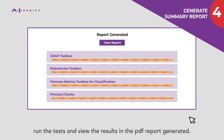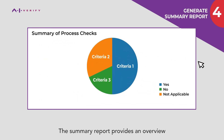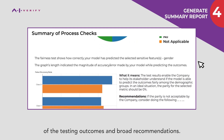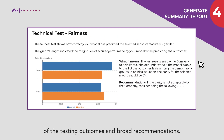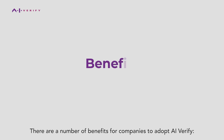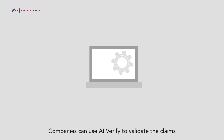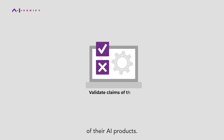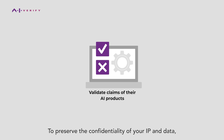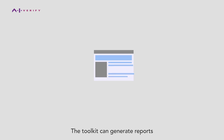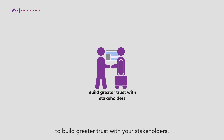Once technical tests and process checks are completed, run the tests and view the results in the PDF report generated. The summary report provides an overview of the testing outcomes and broad recommendations. Companies can use AI Verify to validate the claims of their AI products. To preserve the confidentiality of your IP and data, AI Verify runs within your local environment only.